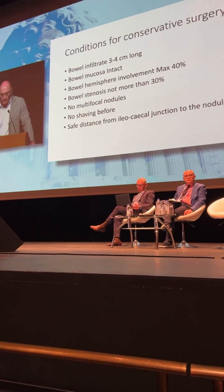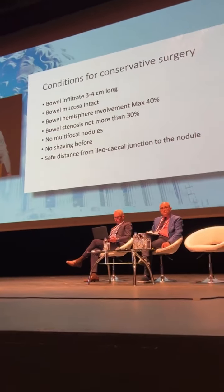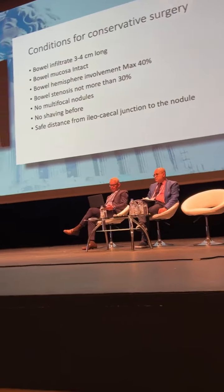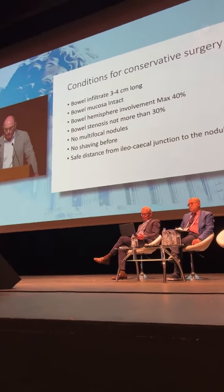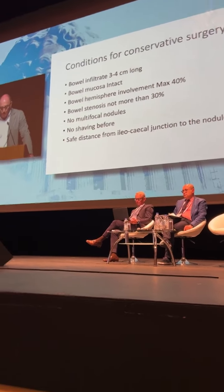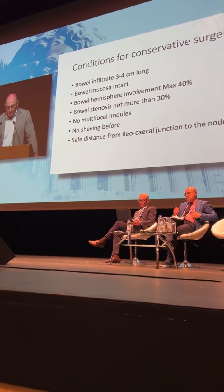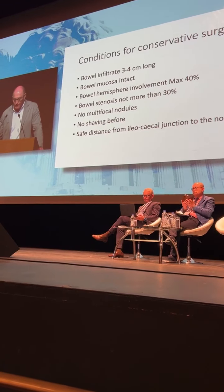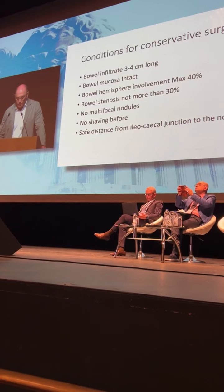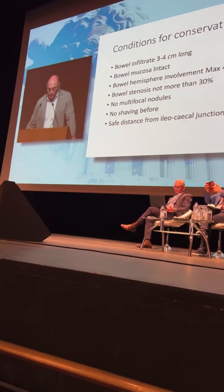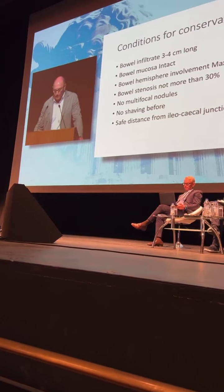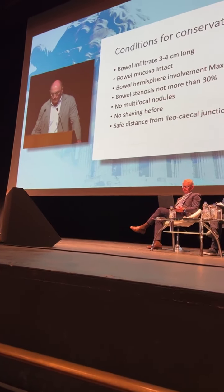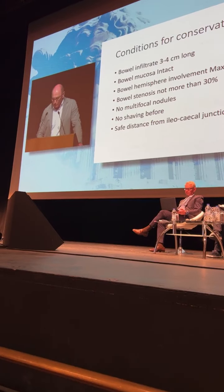If you decide to do conservative surgery, specific conditions must be met: small length of infiltrate less than 4 cm, bowel mucosa intact, bowel circumference involvement less than 40%, stenosis length less than 30%, no multifocal nodules, and no prior shaving. If these conditions are met on the right side, we can identify safe distance from the inner rectal junction.